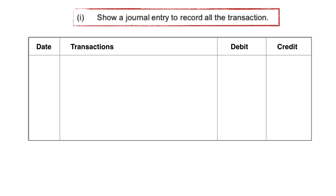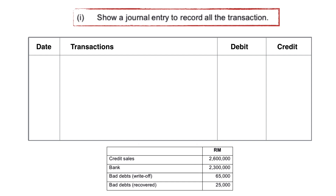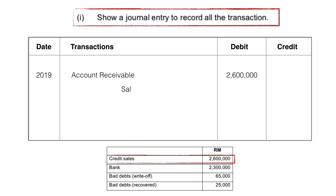Having information from the questions, we will be recording the first transaction, that is credit sales. When credit sales happen, it will increase the accounts receivable. Hence, we will debit the accounts receivable. Next, we will credit the sales account since sales increase, and don't forget to write your narration for the transaction.